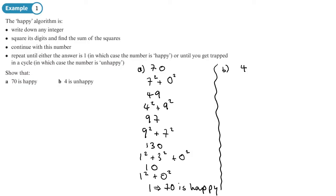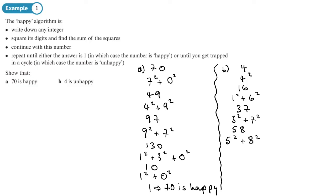Now moving on to part B with the number 4. We square 4 to get 16, then one squared plus six squared gives one plus 36, which is 37. Then three squared plus seven squared gives nine plus 49, which is 58. Then five squared plus eight squared gives 25 plus 64, which is 89.